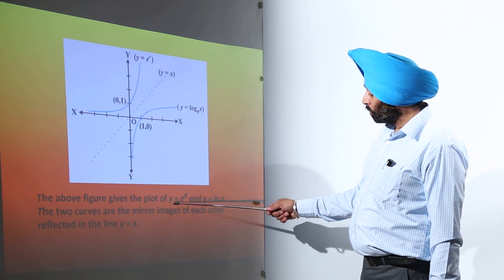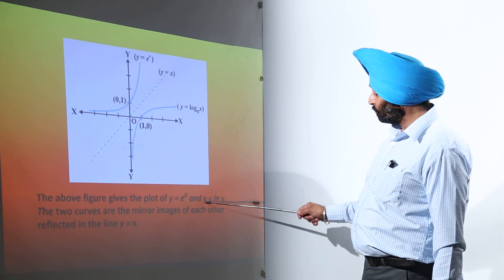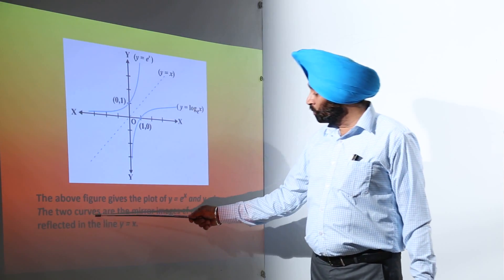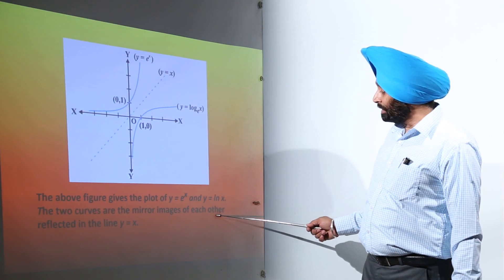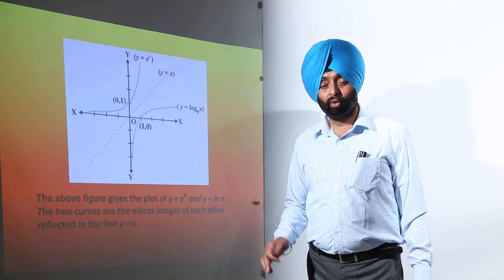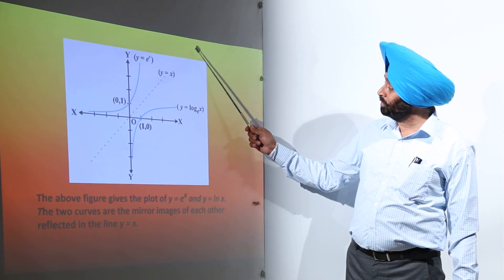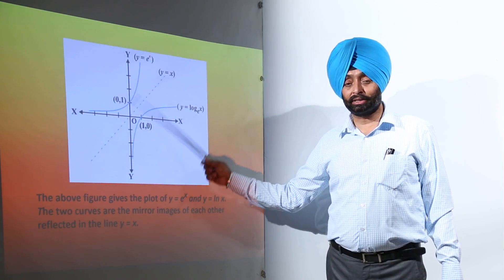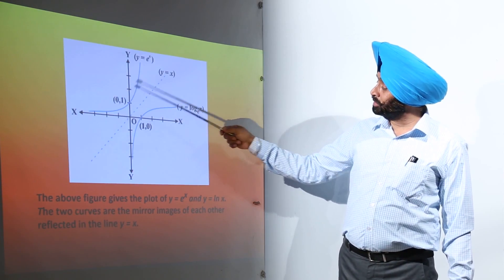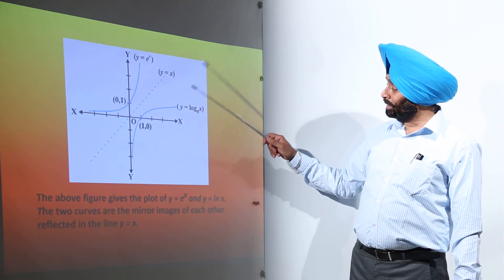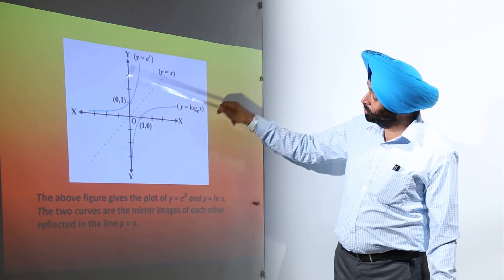The above figure gives the plot of y equals e raised to power x and y equals log x. The two curves are mirror images of each other, reflected in the line y equals x. If this line acts as a mirror, then this is exactly the mirror image of this, and vice versa.